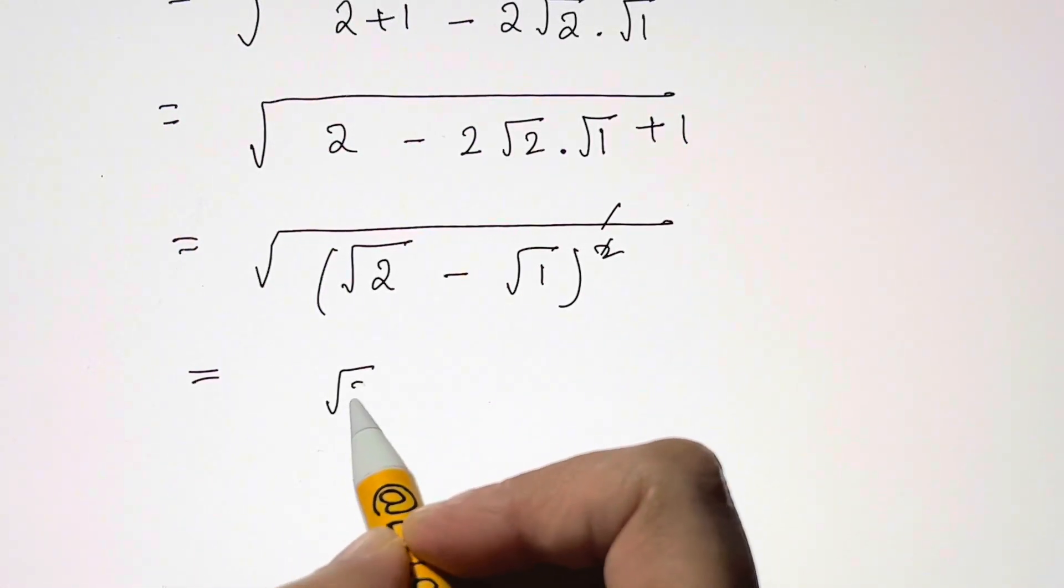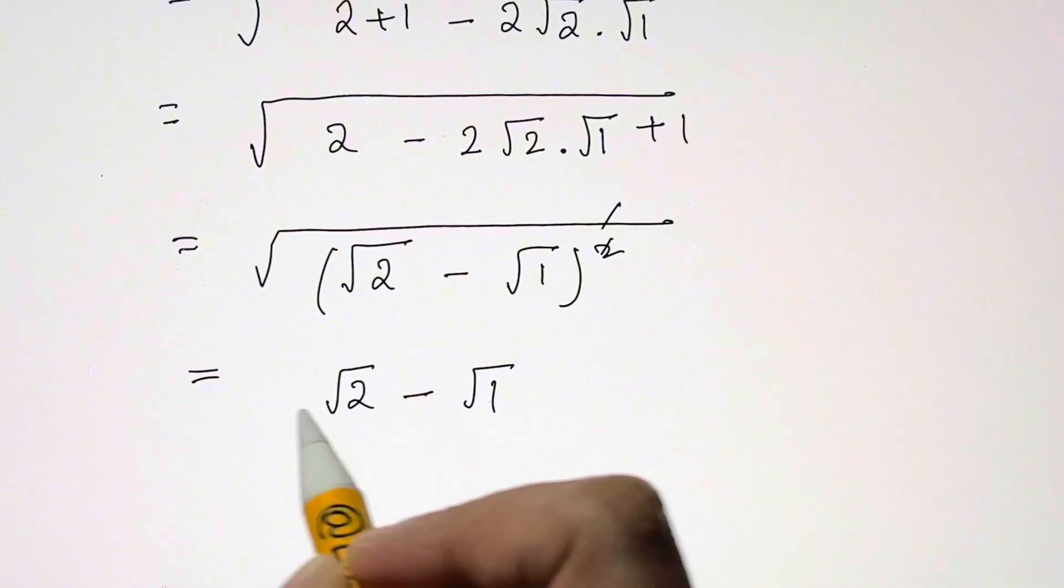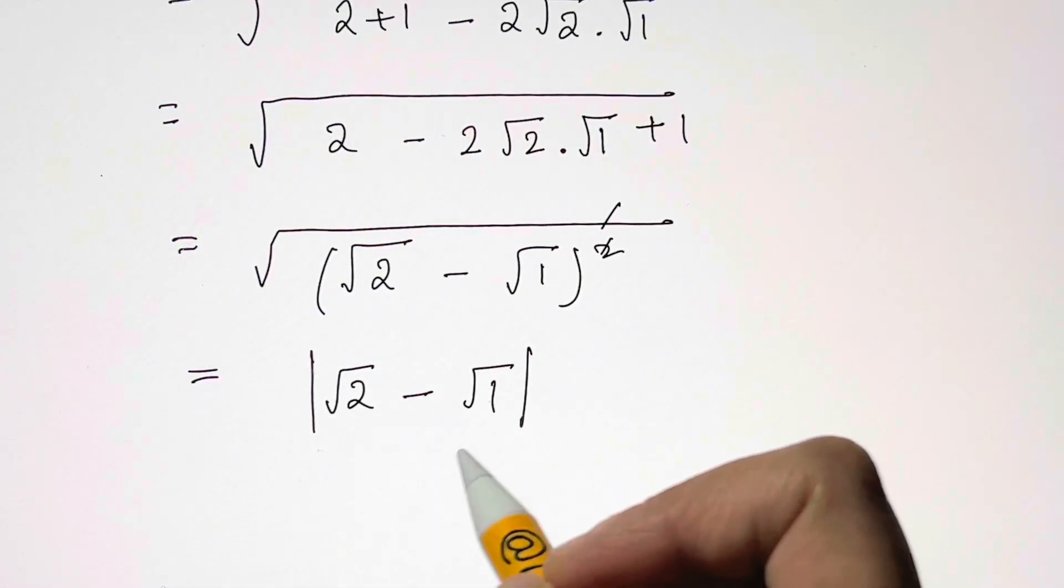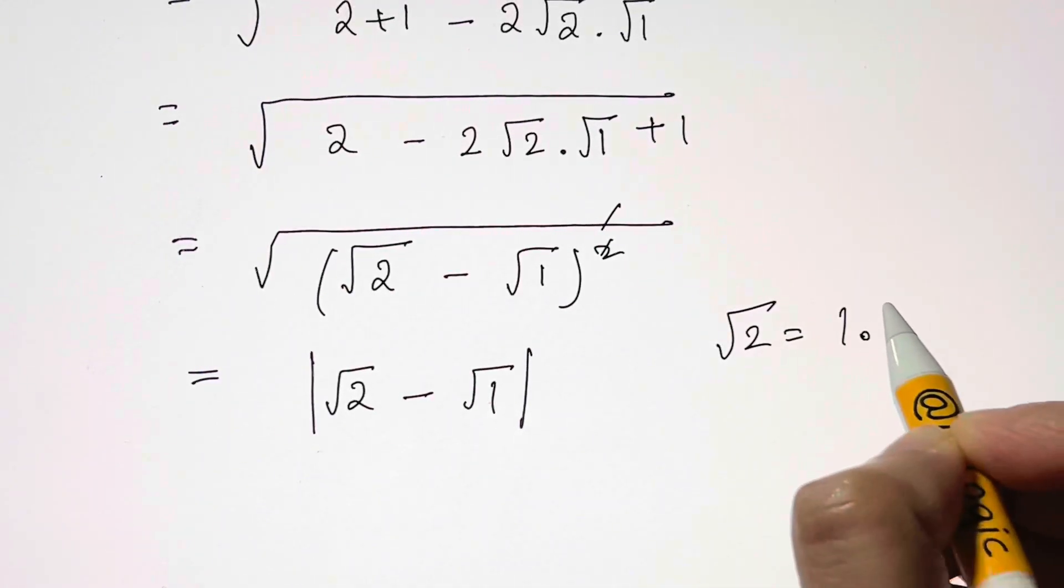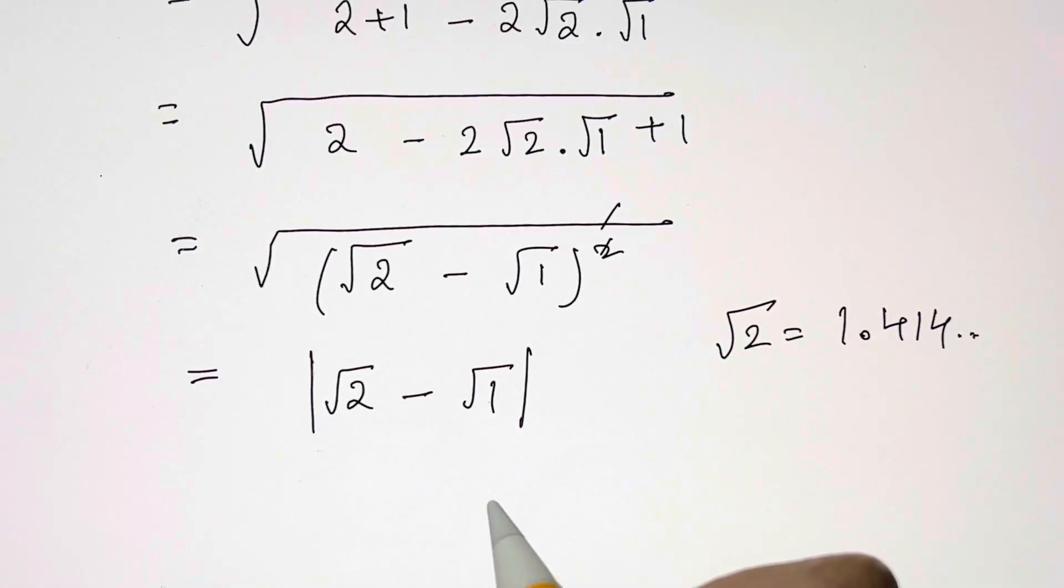So we have root 2 minus root 1, and this is under the modulus so it means that you'll have a positive answer. And we know what square root of 2, that's equal to 1.414 and something. The answer will always be positive so you will have root 2 minus 1 as your answer.